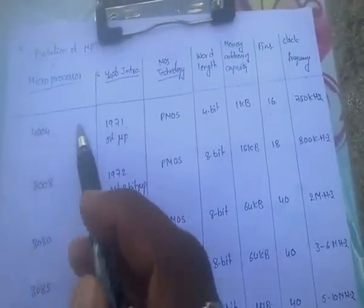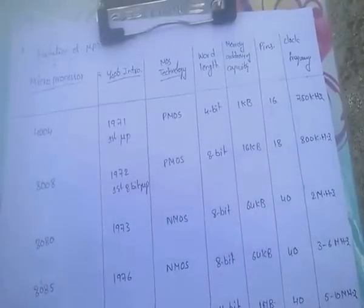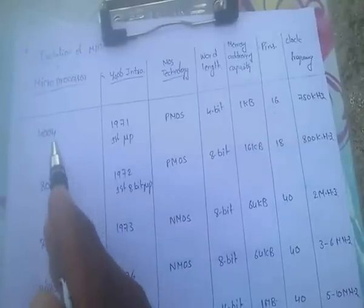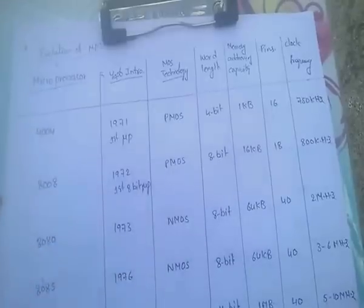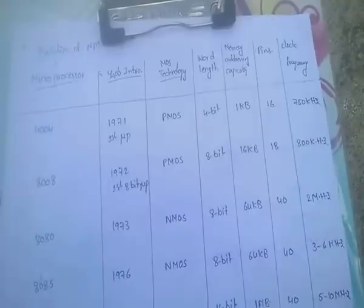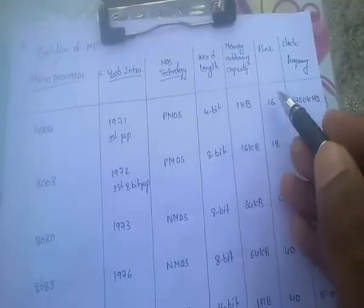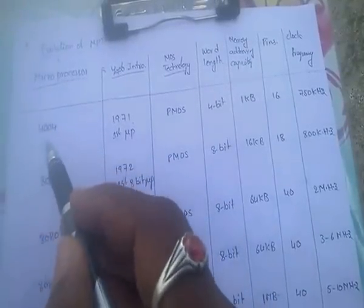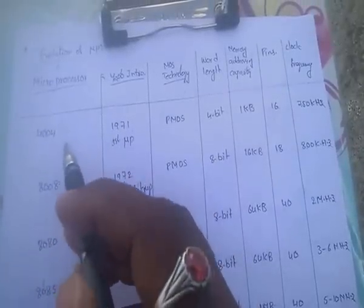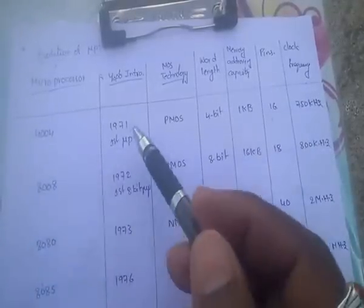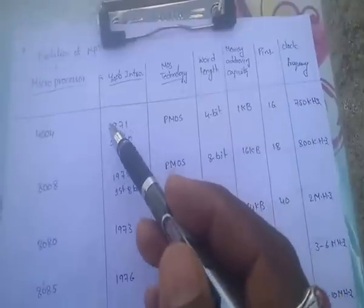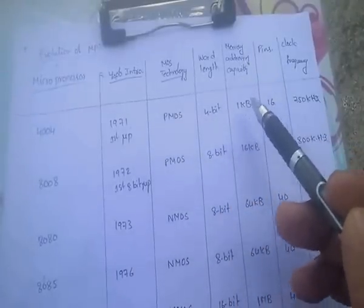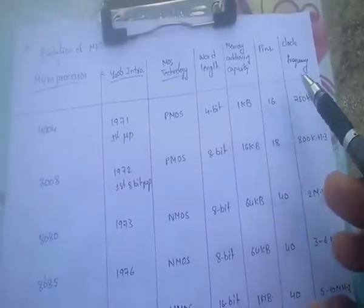The first microprocessor was developed in 1971 by Intel Corporation — it is the 4004. The 4004 uses PMOS technology, has a 4-bit word length, 16 pins, memory addressing capacity of 1 kilobyte or less, and a clock frequency of 750 KHz.